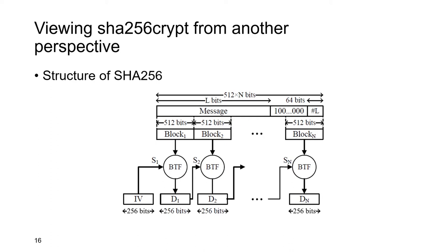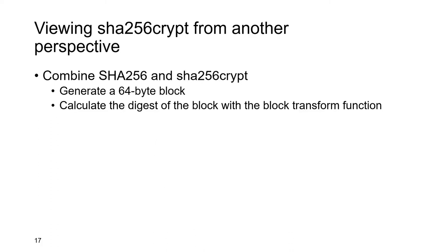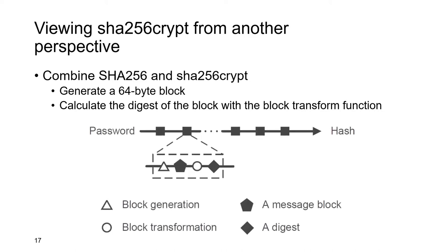Each block is processed by the block transform function and generates a temporary digest, which is used as the state of the next block transform function. If we combine the details of the SHA function and SHA-256-crypt function, the operations in SHA-256-crypt can be further classified as follows: first, we generate a 512-bit block; second, we calculate the digest of the block with the block transform function. By this way, the execution process of SHA-256-crypt is abstracted as the generation and transformation of a series of message blocks.